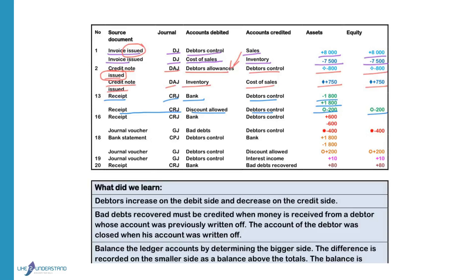We issue a receipt as proof and record it in the cash receipts journal. Bank is debited to increase the asset. Debtors control is credited to decrease the asset. Then in the general journal, using a journal voucher, bad debts is debited because expenses increase on the debit side — expenses decrease profit, so equity decreases. Debtors control is credited because the debtor owes us less, so assets decrease on the credit side.